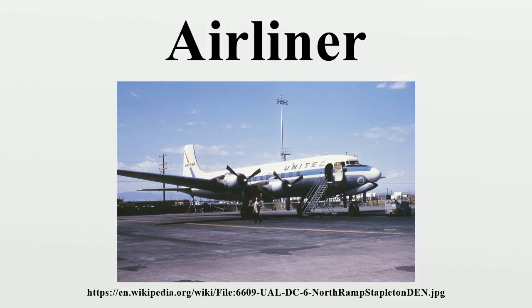In Britain, the de Havilland Dragon was a successful aircraft during the 1930s. Its simple design used a plywood box fuselage. It could carry six passengers each with 45 pounds of luggage on the London–Paris route on a fuel consumption of just 13 gallons per hour. The wing panels outboard of the engines could be folded for storage. The type was attractive as a short-haul low-capacity airliner and was soon in service worldwide.